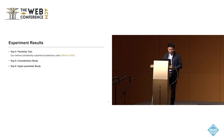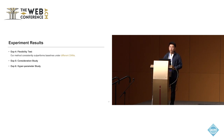For the remaining experiments, we conduct a flexibility test evaluating our methods under different GNNs, and our methods consistently outperform baselines across different GNNs. We also perform an ablation study examining the different considerations we developed. Finally, a hyperparameter study evaluates the impact of hyperparameters in our methods.